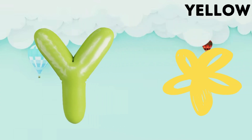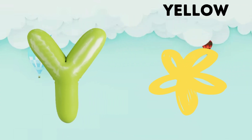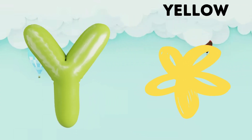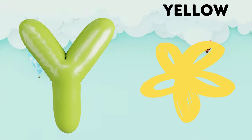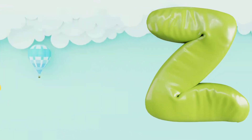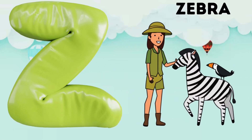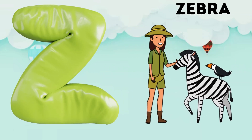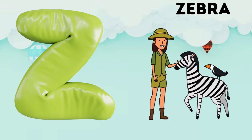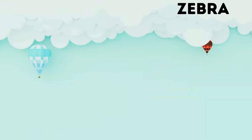Y is for yellow, ye-ye-yellow. Z is for zebra, z-z-zebra.